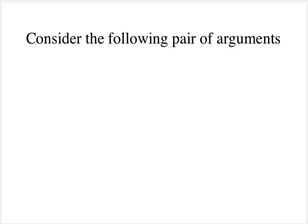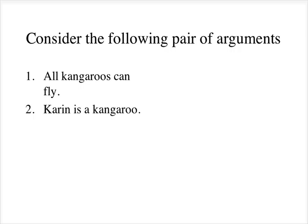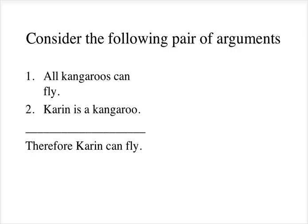This lecture will illustrate the concept of validity with a couple of arguments, one of which I call the kangaroo argument, and the other is called the penguin argument. So we'll start by considering the following pair of arguments. All kangaroos can fly. Karin is a kangaroo. Therefore, Karin can fly. This is the kangaroo argument.